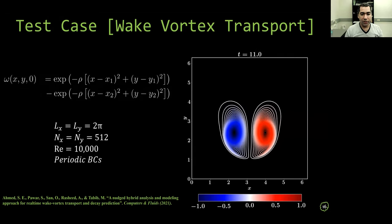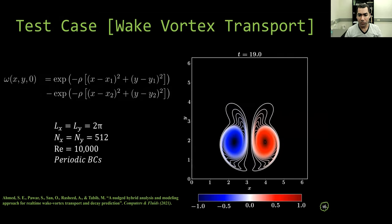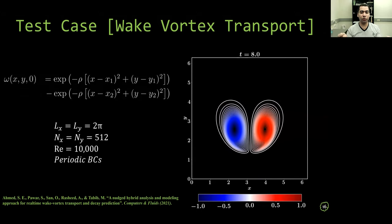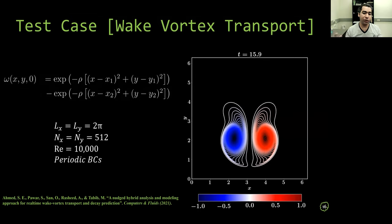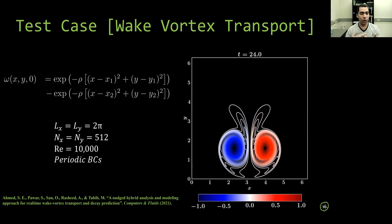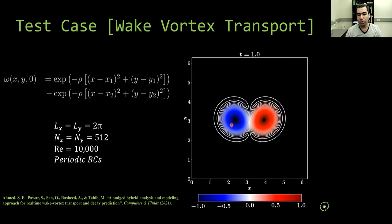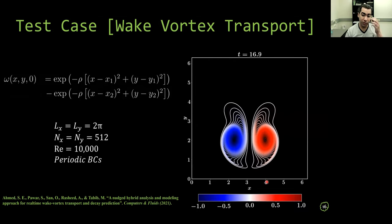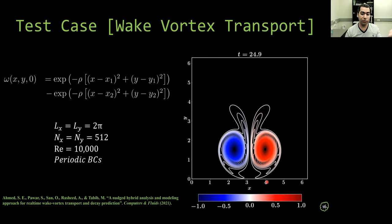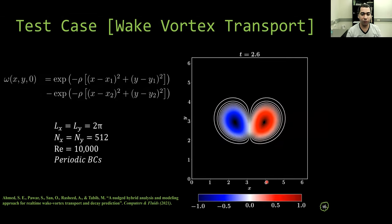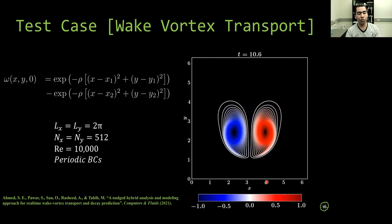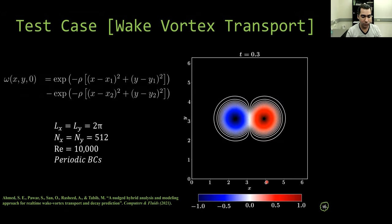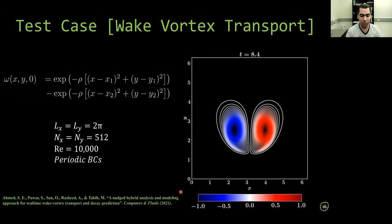Our first case is a wake vortex transport problem in a 2D scenario, where we initialize our flow with two counter-rotating Gaussian vortices. We assume a 2D domain of 2π by 2π with periodic boundary conditions and Reynolds number of 10,000. And for the full-order model simulation, we use a 512 by 512 Cartesian grid. And details can be found in this paper.